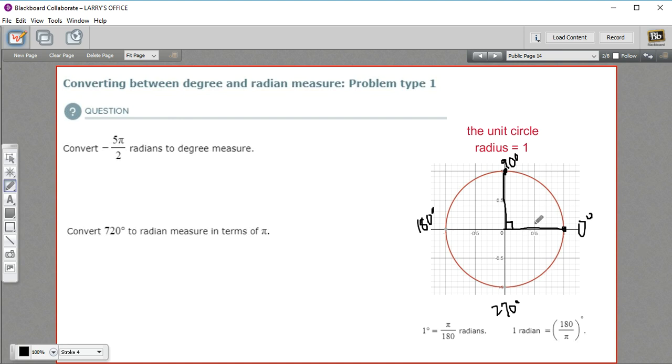There's another way to measure the distance around a circle too. And that's called radians or radian measure. And this is based on what we call the unit circle. And you'll be seeing this a lot as you study trig. The unit circle is just a circle with a radius of one, one unit. So that's why it's called the unit circle.